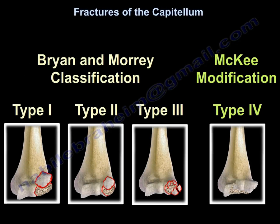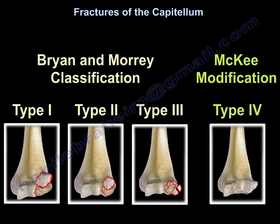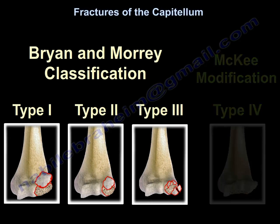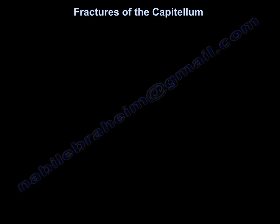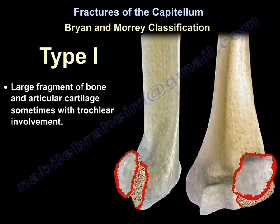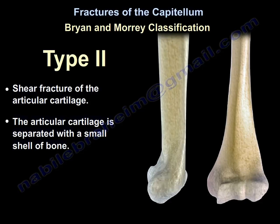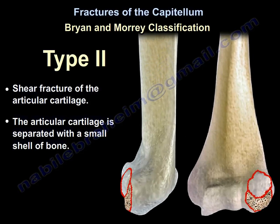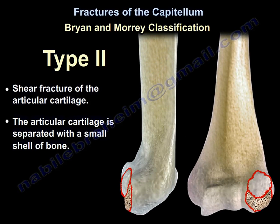Classification of Capitular Fractures — Bryan and Morrey Classification. Type 1: a large fragment of bone and articular cartilage, sometimes with trochlear involvement. Type 2: a shear fracture of the articular cartilage, where the articular cartilage is separated with a small shell of bone.